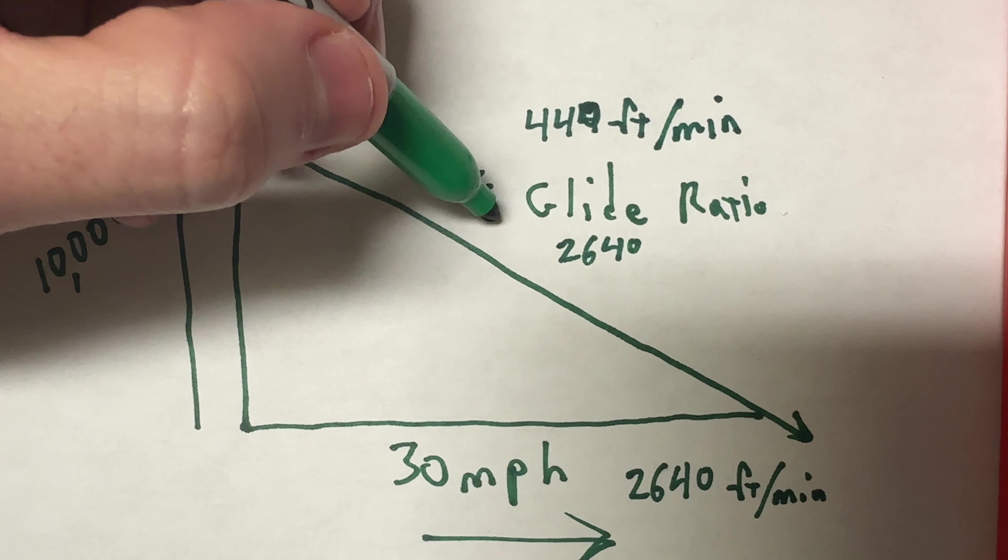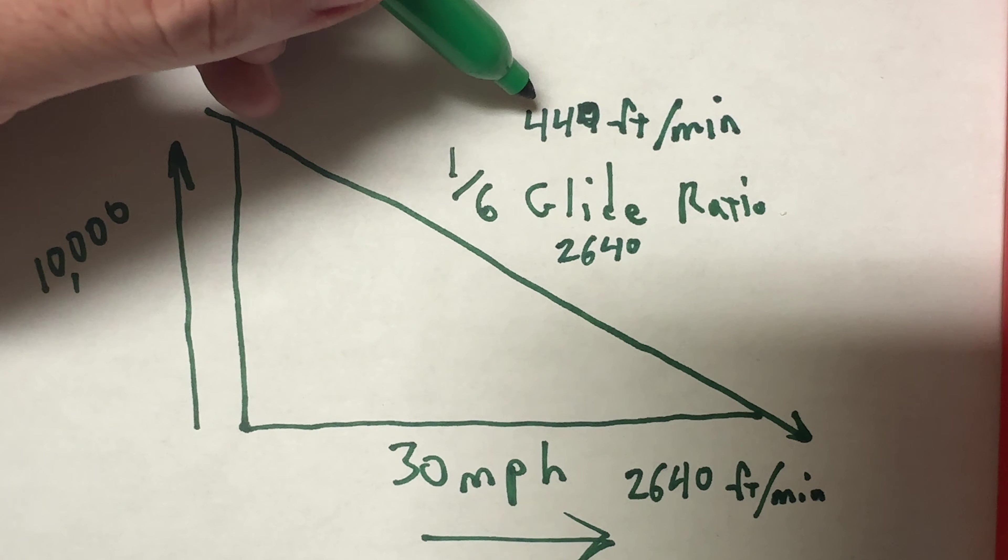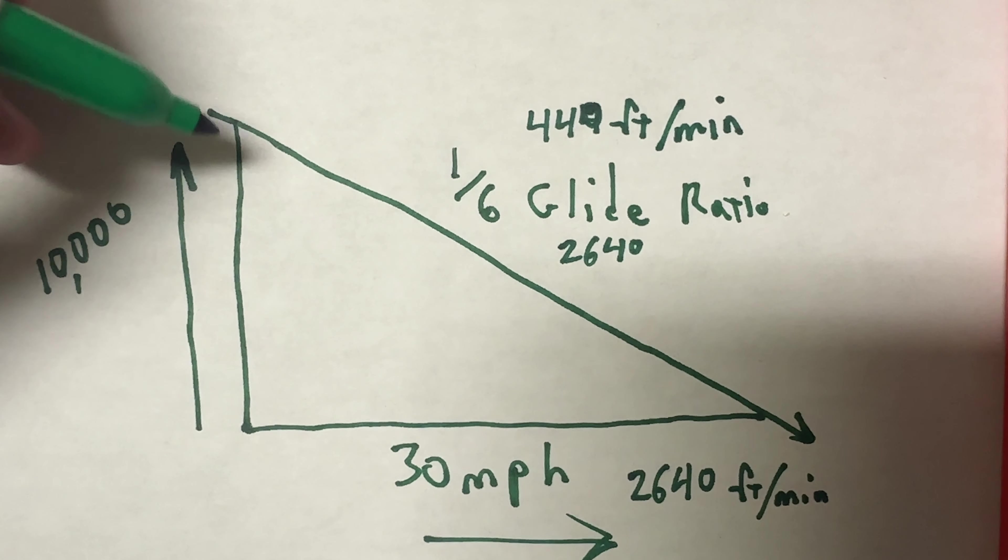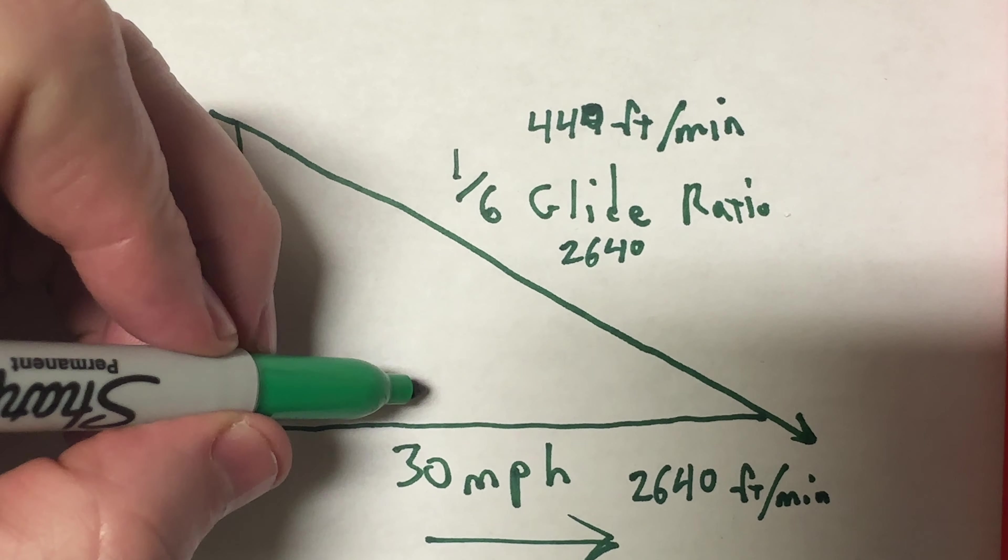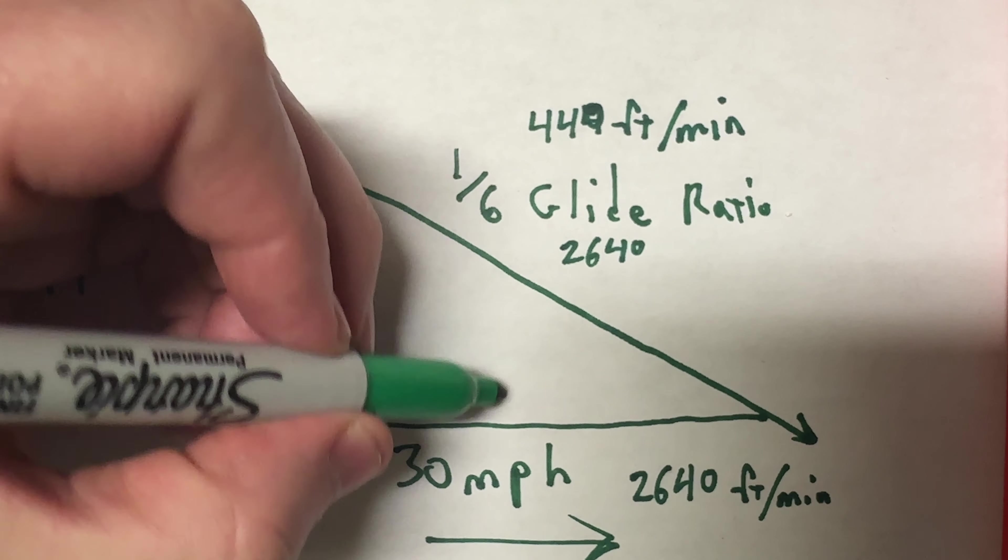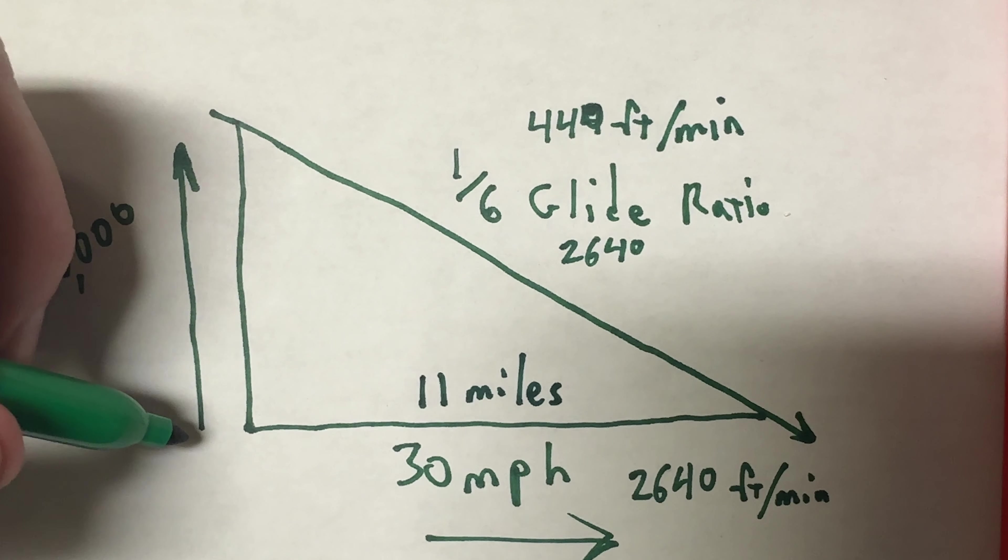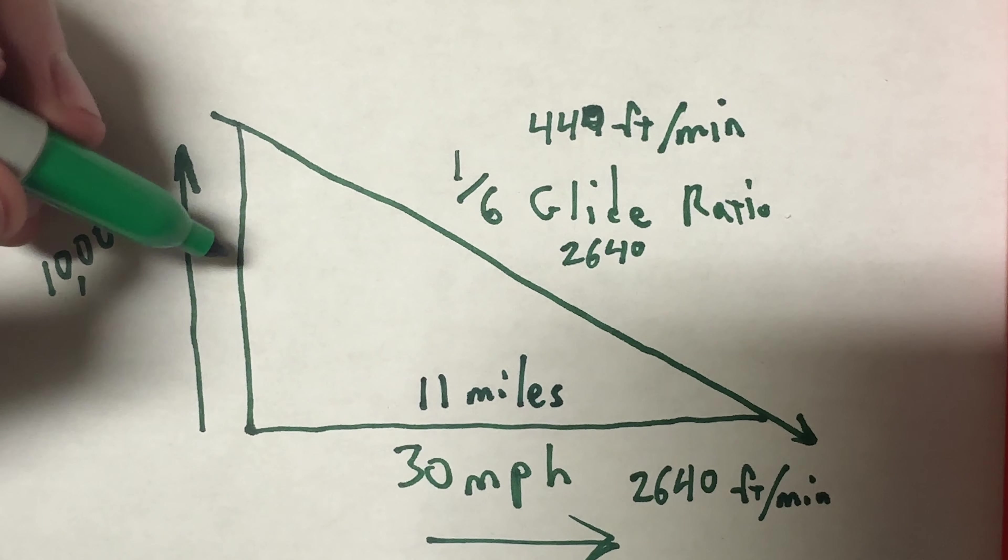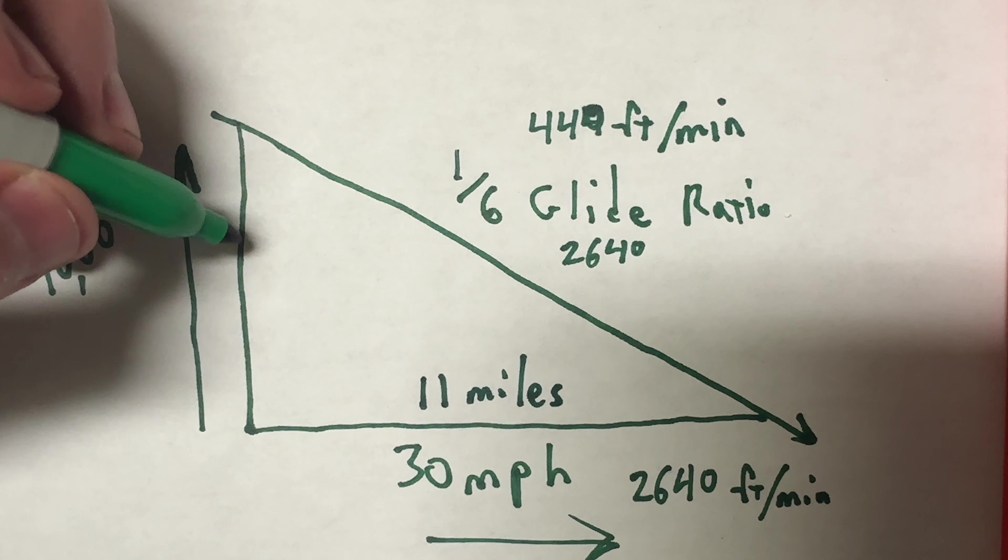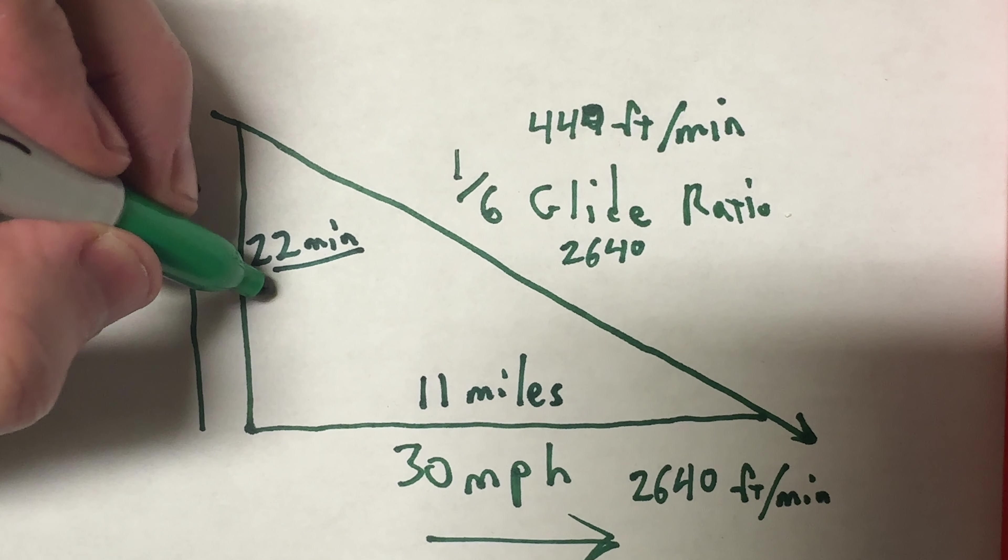So if my glide ratio is 1 to 6, and I'm going forward at 2640 feet per minute, then I should be going down at 440 feet per minute, which puts me at going about 11 miles forward and then coming down this 10,000 feet. And if I divide that out, 10,000 divided by 440 gives me about a 22-minute glide.